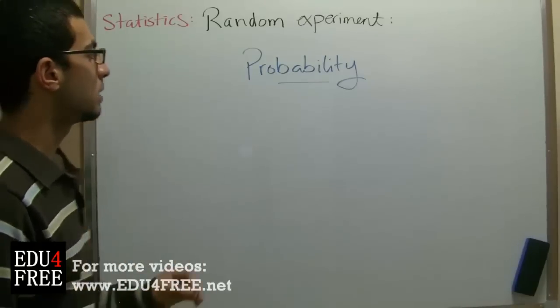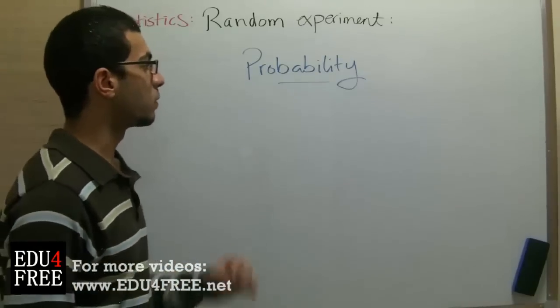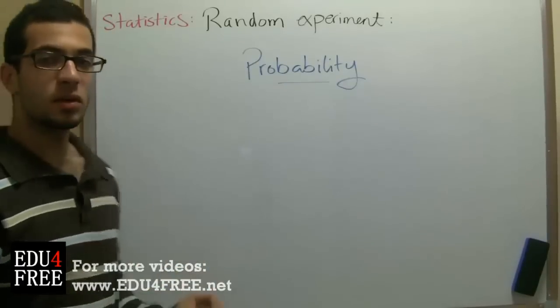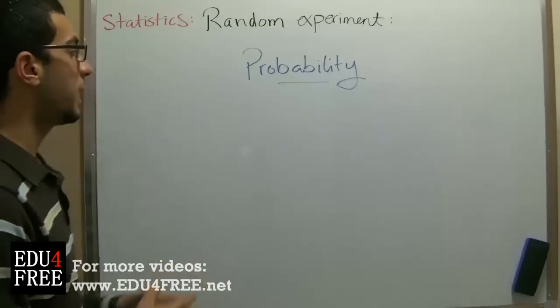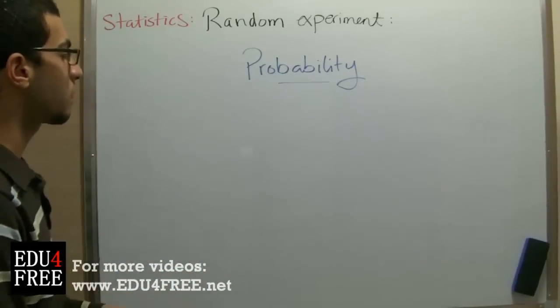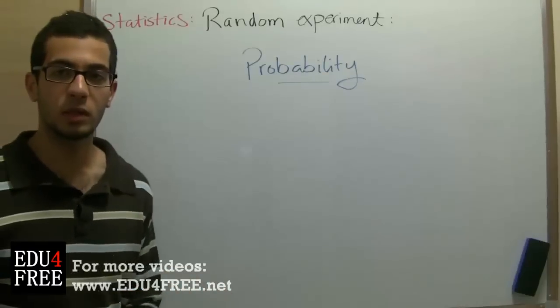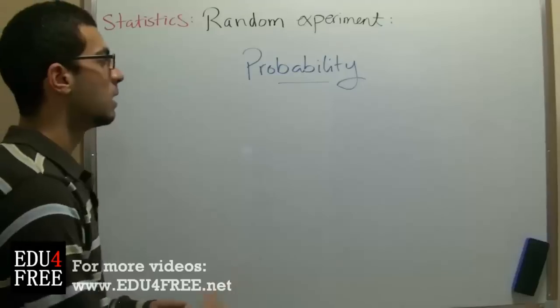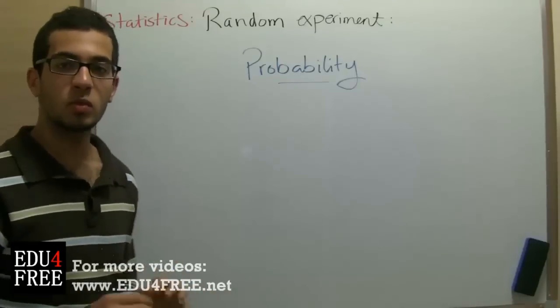And here we must take care of the word probable. We cannot say it's certain to occur, because now this is not probability, this is certainty. In the random experiment you can expect all the results and say that some of the results are probable to happen, but you are not certain which one of these will happen.